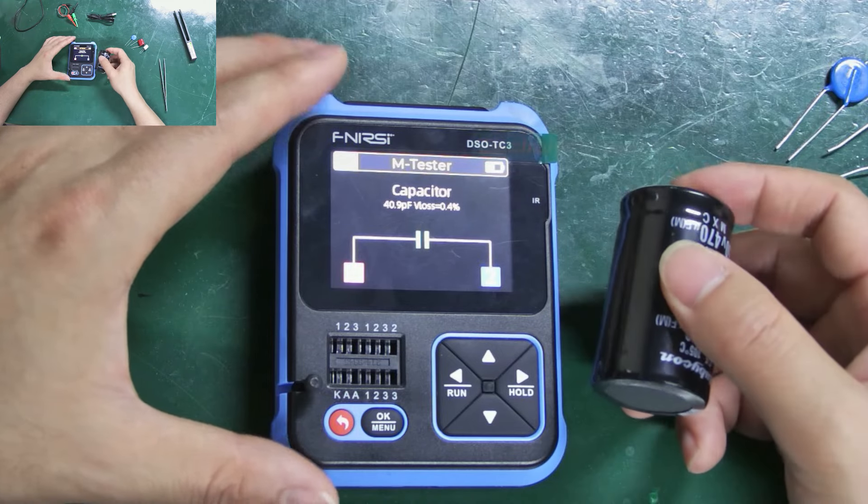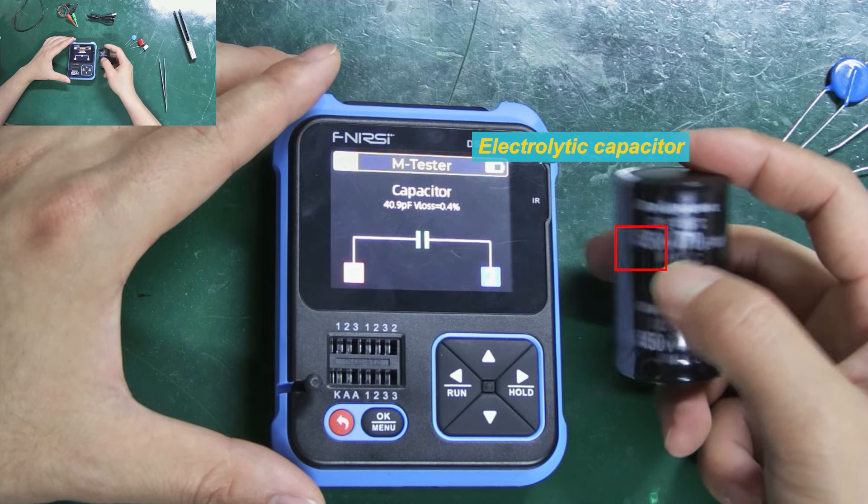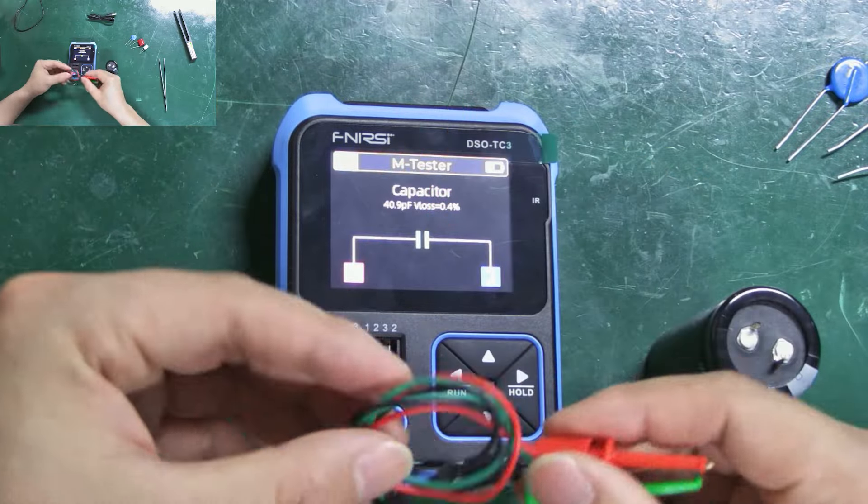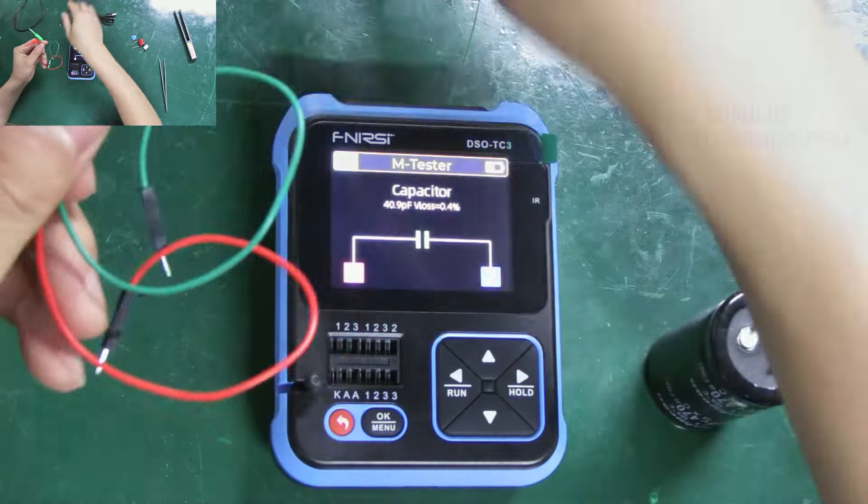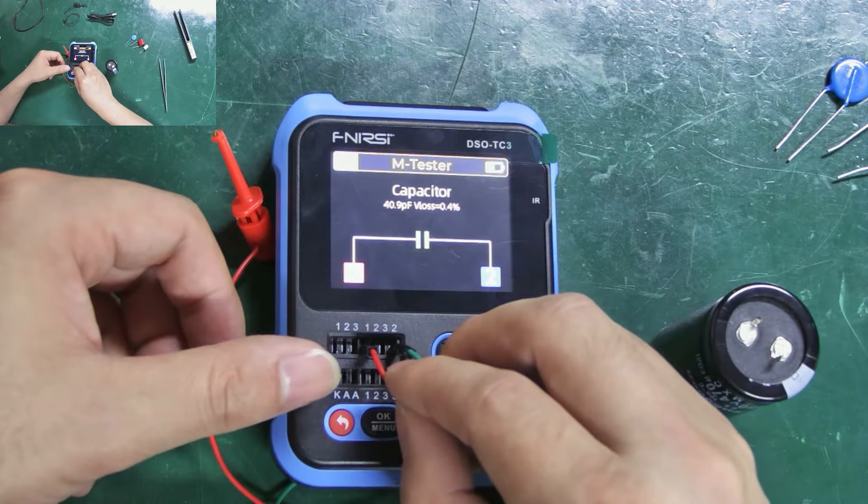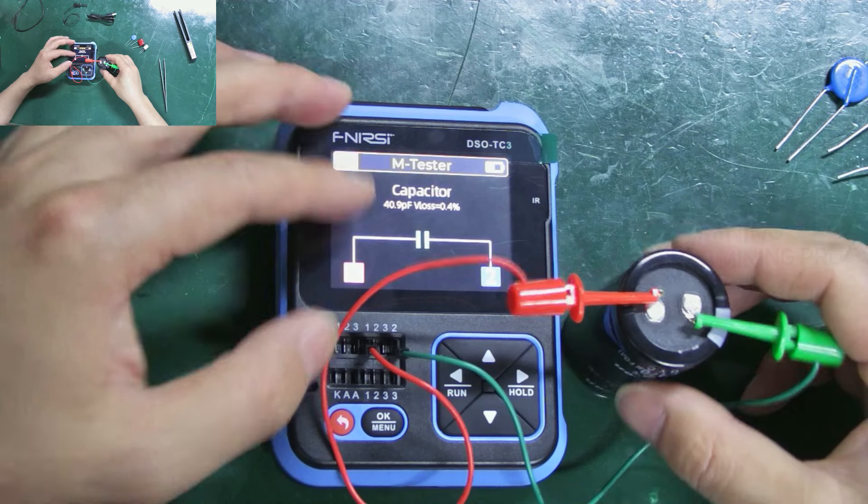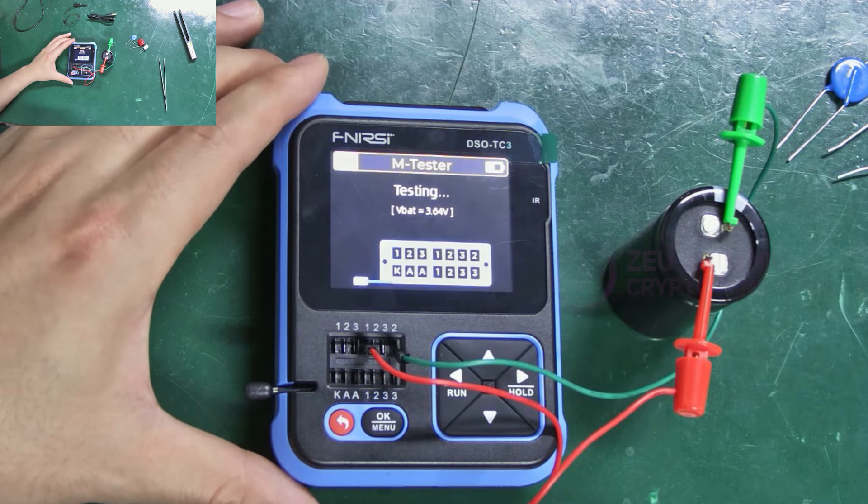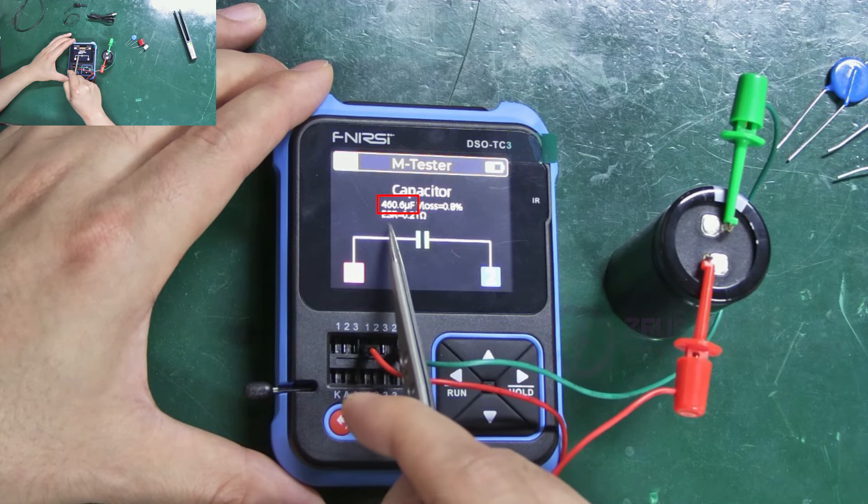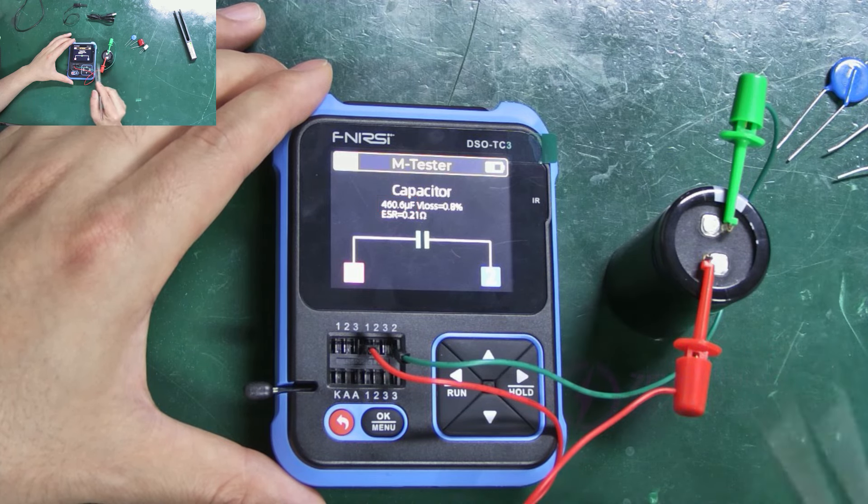Now I'm going to show you how to measure this larger electrolytic capacitor which has a withstand voltage of 450 volts and a capacity of 470 microfarads. At this point we need to use the test hooks. Choose any two cables and choose one-two test hole. Lock it in, and then use the test hooks to connect to the two pins of the capacitor. Press the OK button. The measurement result is in - its capacity is around 460 microfarads, which is close to the labeled 470 microfarads, indicating our measurement method is correct.